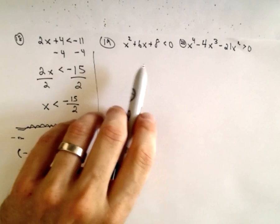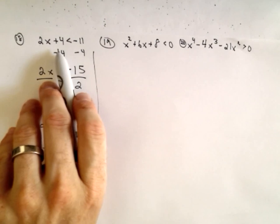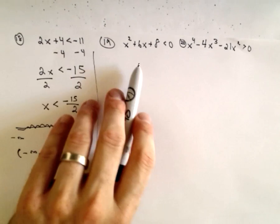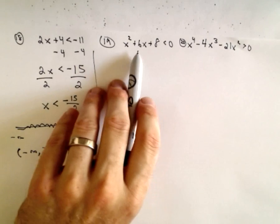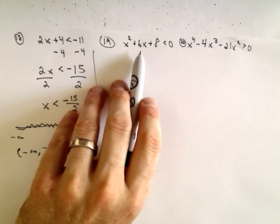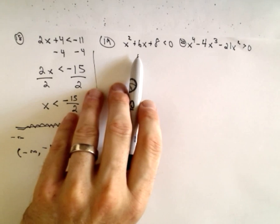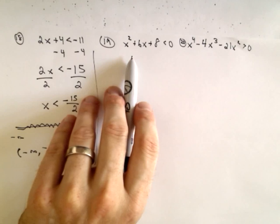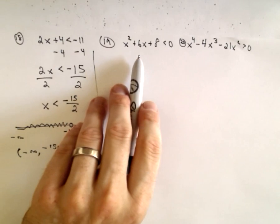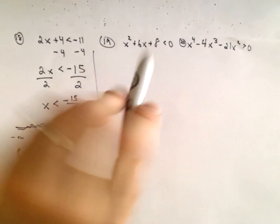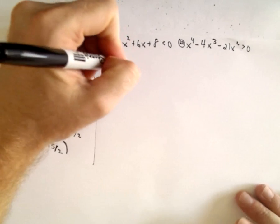So now, the general procedure. If you have higher-degree polynomials, typically what you want to do is factor it and solve the corresponding equation as though it was equal to zero. Let's do that first.